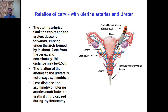The relation of the cervix with the uterine arteries and ureter is very important surgically. The uterine arteries flank the cervix and the ureters descend forwards, curving under the arch formed by the uterine artery about 2 cm from the cervix. Occasionally this distance may be reduced to 0.5 cm. The relation of the arteries to the ureter is not always symmetrical, and this asymmetry contributes to ureteral injuries during hysterectomy. The ureter passes anterior-inferiorly on either side of the lateral wall of the uterus to open into the urinary bladder.